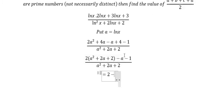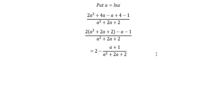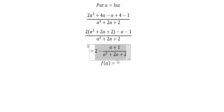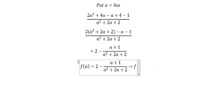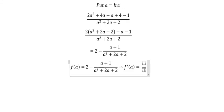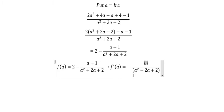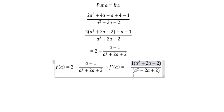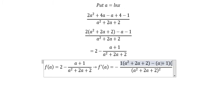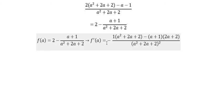We have negative a + 1 over a² + 2a + 2. Now we need to find the first derivative of this function. Taking the first derivative: the derivative of a is 1, so we copy a² + 2a + 2. Next we have the negative part: (a + 1) multiplied with (2a + 2). Now we need to simplify everything.